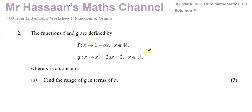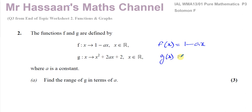The functions f and g are defined as follows: f of x is 1 minus ax, and g of x is x squared plus 2ax plus 2, where a is a constant. Part A asks us to find the range of g in terms of a.